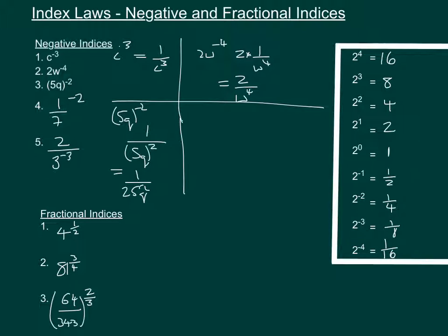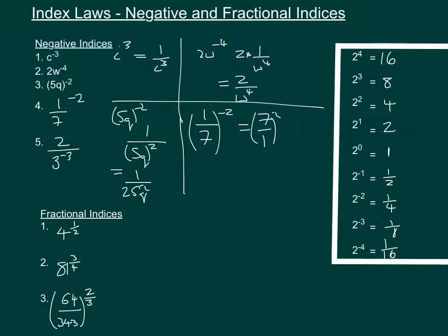If we look at the fourth one, here it's just numbers with no letters — we've got 1 over 7 and the whole thing is to the power of minus 2. So we're going to do the reciprocal again, which means we flip the fraction over and put it to the power of 2. So we get 7 squared over 1, which is 49.